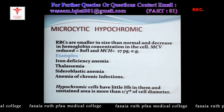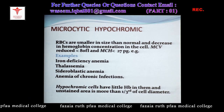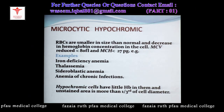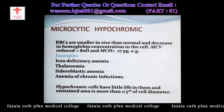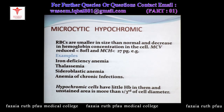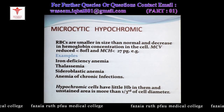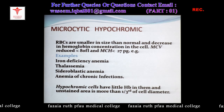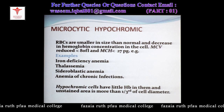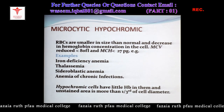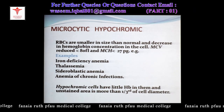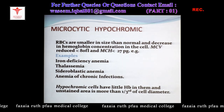The next important group is microcytic hypochromic anemia. As the name indicates, the size of the RBC is decreased and the hemoglobinization within the RBC is also less — that is hypochromic. Size is determined by MCV, which is usually less than 80 femtoliters. The MCH (mean corpuscular hemoglobin), the average hemoglobin in all RBCs, is less than 27 picograms (normal range 27–32 picograms).